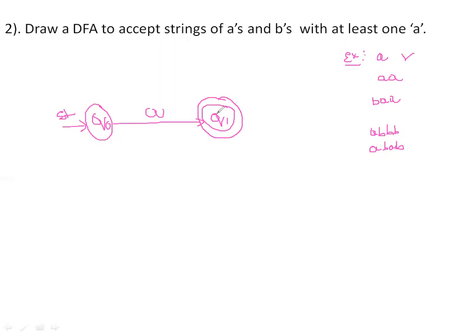Let's verify: Q0 on receiving A goes to Q1, which is the final state — single A is accepted. For double A, Q0 receives the first A and moves to Q1; we provide a self-loop on A at Q1 so the second A is also accepted. Now, strings may begin with B — for BAA, when the machine receives B, it should stay in Q0 itself.